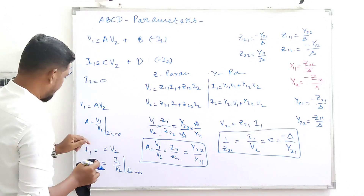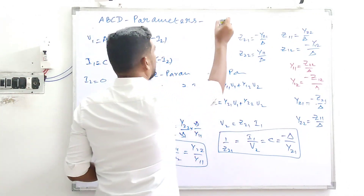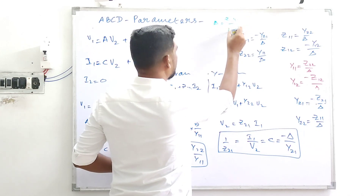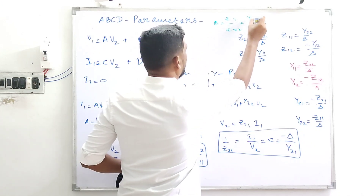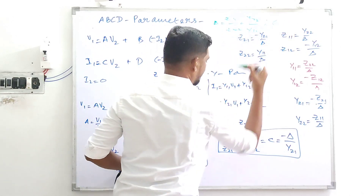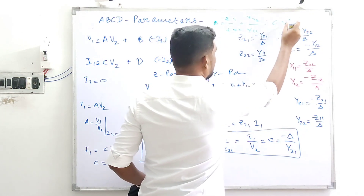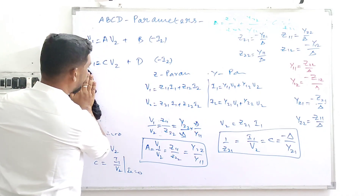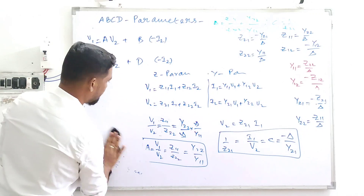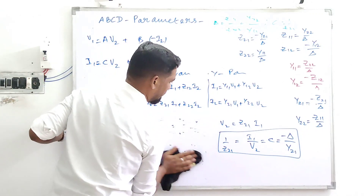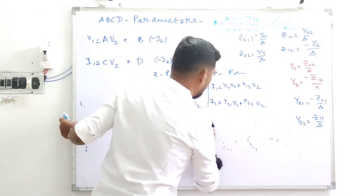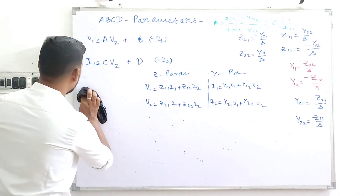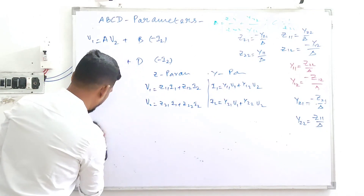So summarizing: A = Z11/Z22 = Y22/Y11, and C = 1/Z21. Now to find B and D, we apply the output short-circuit condition, which makes V2 = 0.